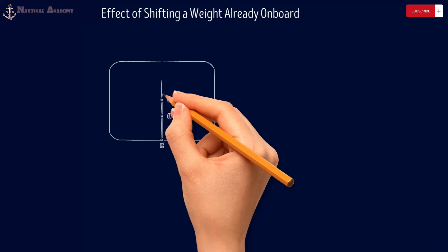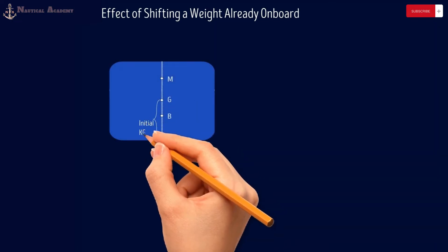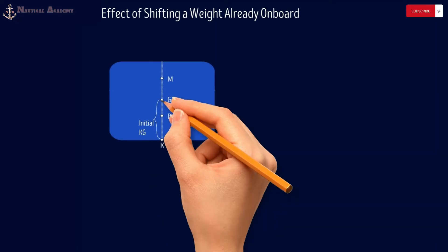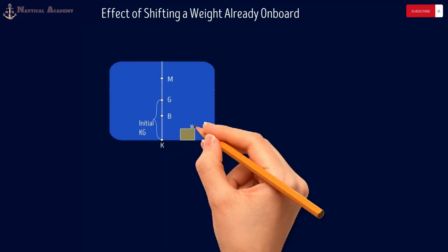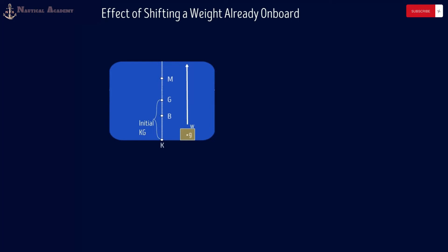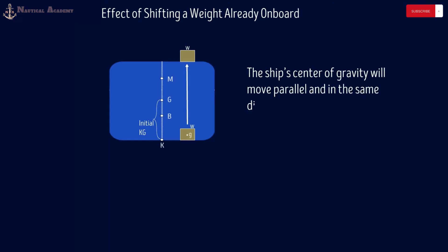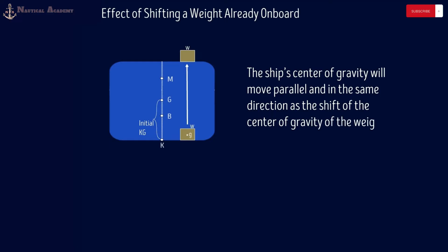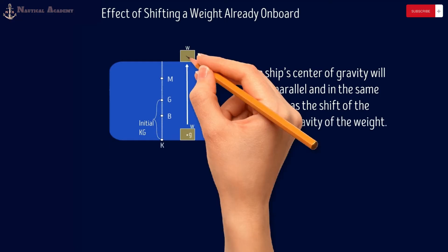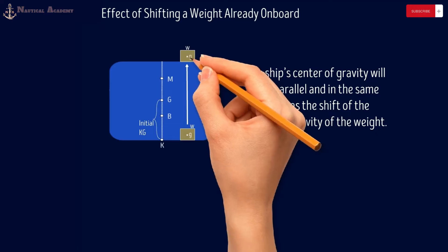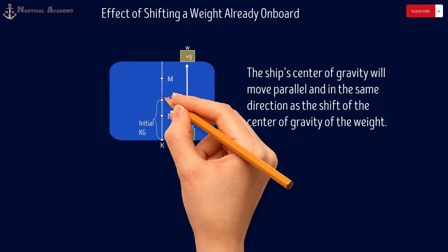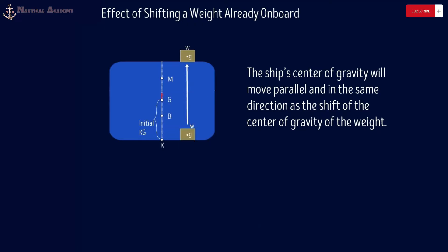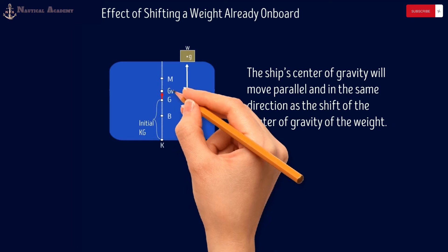If this is the ship's transverse section, and the ship's center of gravity G is here along the centerline — a weight or cargo from the lower hold will be shifted to the main deck, just above the initial position of the weight being shifted. Then the ship's center of gravity will move parallel and in the same direction as the shift of the center of gravity of the weight. Let us label the center of gravity of the weight or cargo as small letter g.